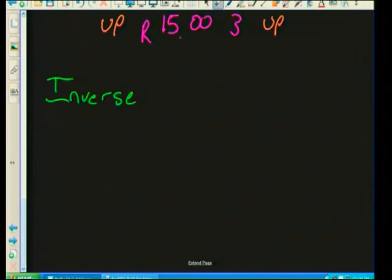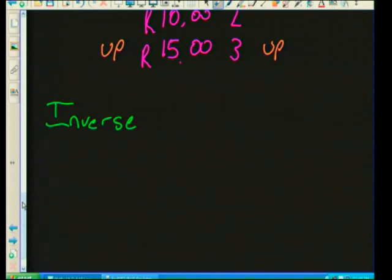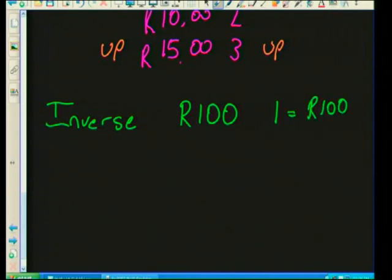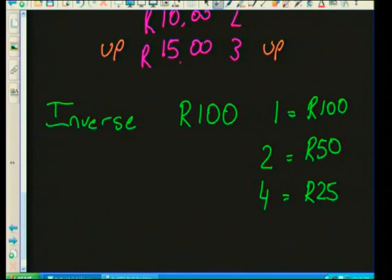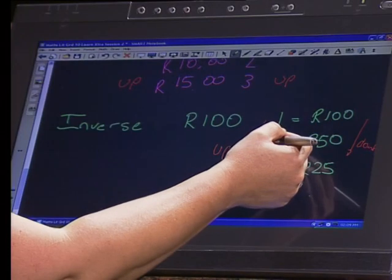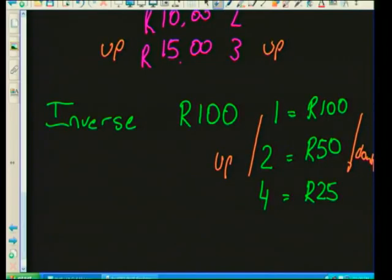Now let's think of an example of inverse proportion. Say I have 100 rand to split amongst children. If there is one child, that child gets 100 rand. If there are two children, they each get 50 rand. If there are four children, they each get 25 rand. As the number of children goes up, the amount each child gets goes down. I doubled from one to two children, and halved from 100 to 50 rand.